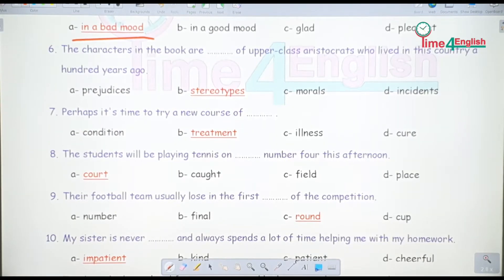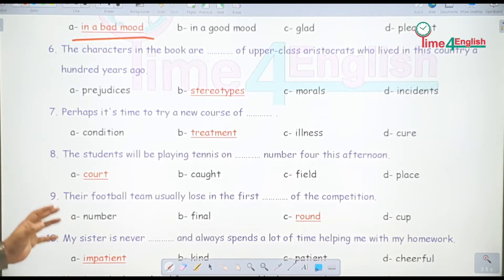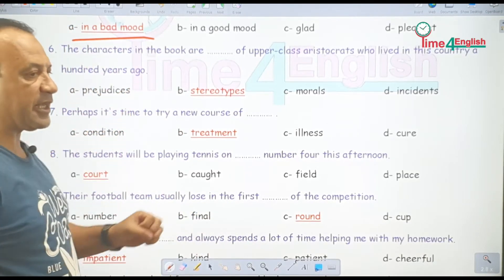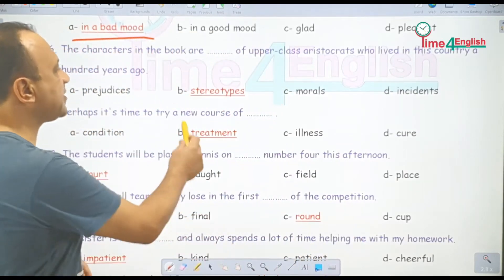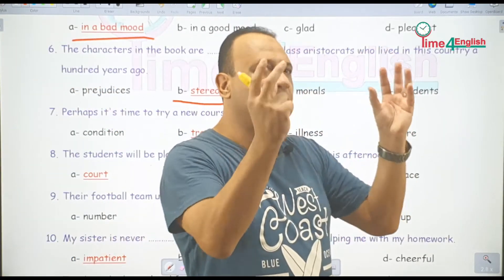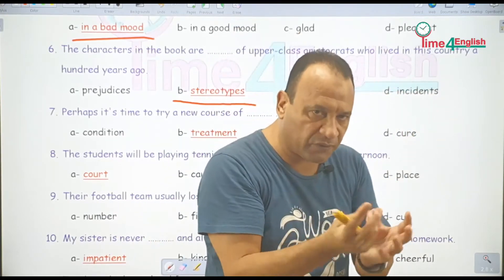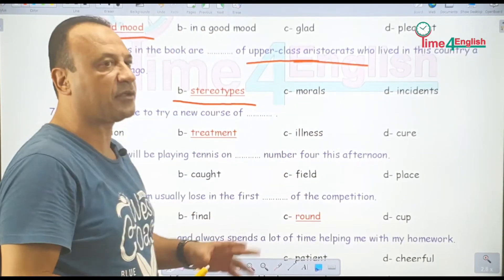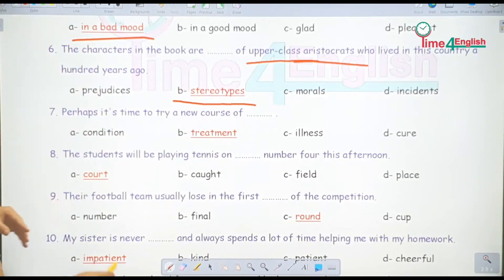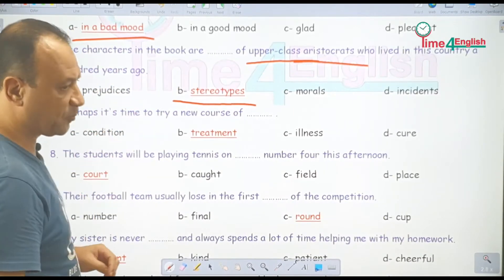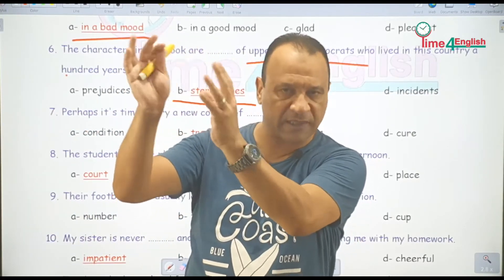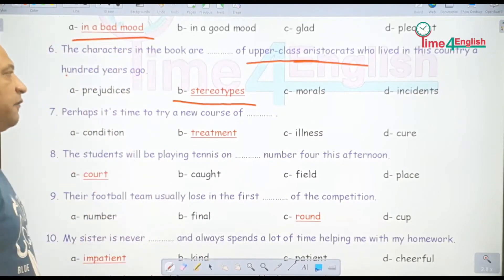The characters in the book are stereotypes of upper class aristocrats who lived in this country a hundred years ago. الشخصيات اللي في هذا الكتاب تعتبر stereotypes — نماذج أو صور نمطية بتجسد الأريستوكراتس — الطبقة الأريستوقراطية اللي كانت عايشة في هذا البلد من مئة سنة. أشكال نمطية وقوالب محفوظة عن هذه الشخصيات اللي كانت عايشة في قديم الزمن.